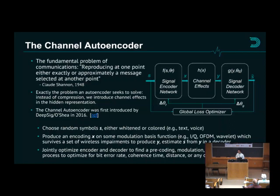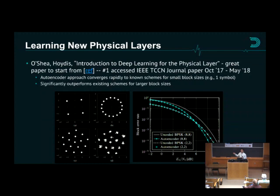The first autoencoder for wireless communications came out in 2016 by Tim O'Shea. He was working with Jakob Hoydis, and they wrote a journal paper together. For the past year, if you go to IEEE Xplore and look at Transactions on Cognitive Communications and Networks, it's the most popular article. So there's certainly a lot of interest in this.